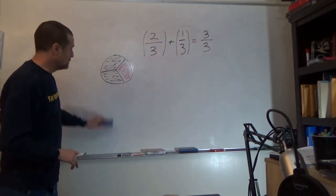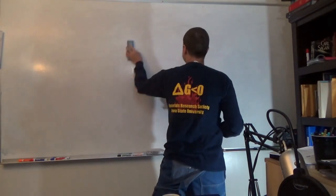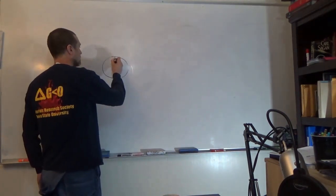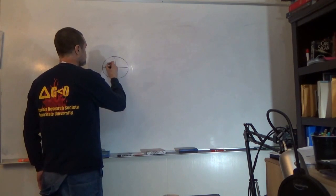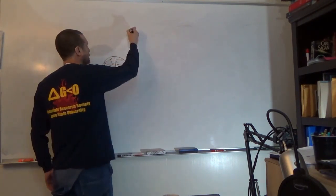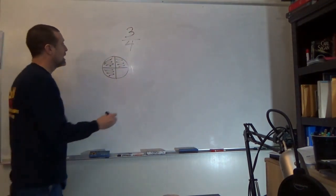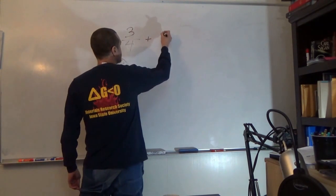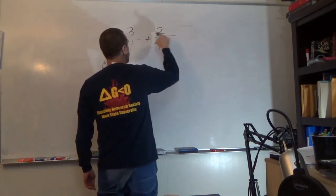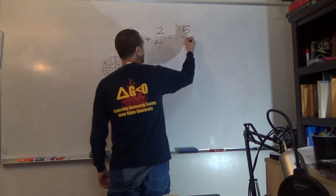What I want to show you is that if I have three parts out of four and I add to it two parts out of four, I get three plus two, which is five over four.